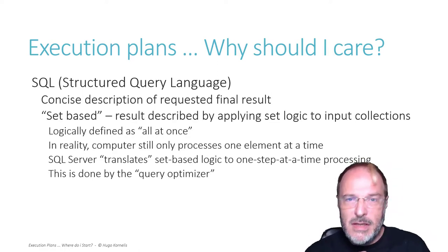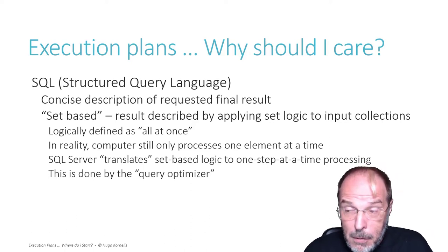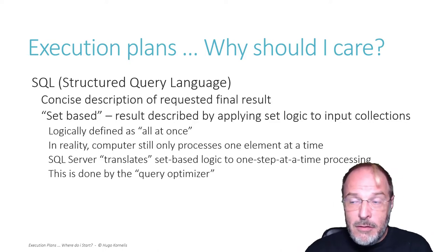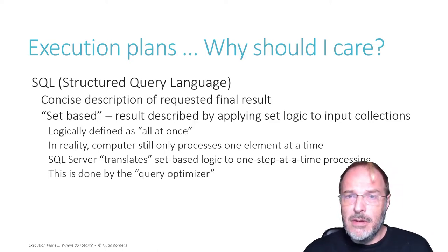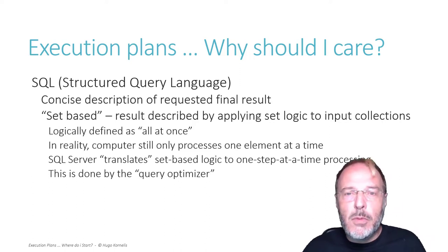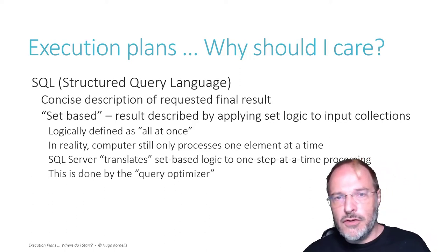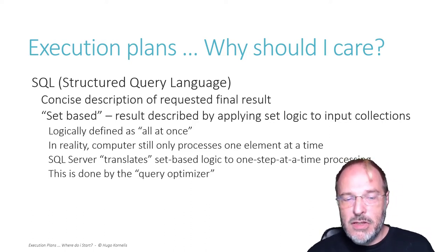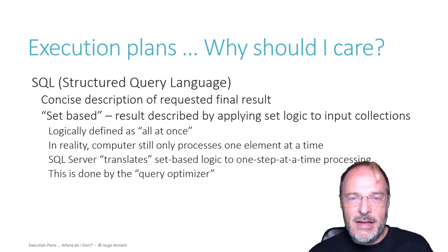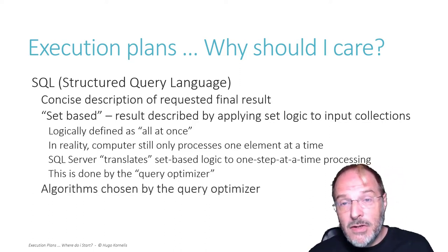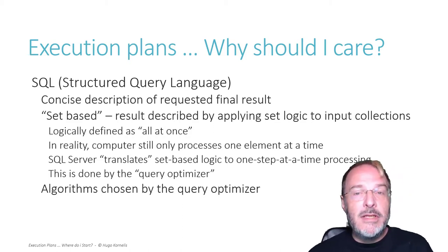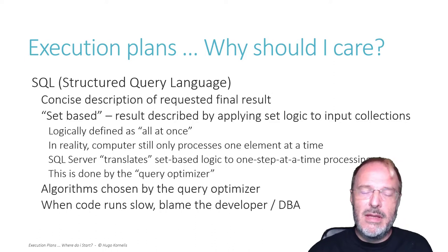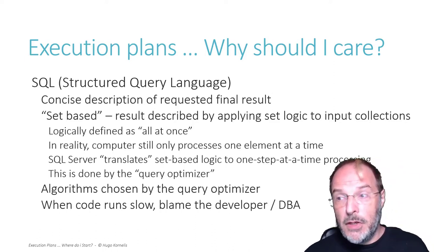We have this set-based description of what we want, but the computer still runs on hardware that per CPU can do only one instruction at a time. So there has to be a translation somewhere between this all-at-once logical description and this one-instruction-at-a-time CPU processing. The query optimizer does that. The query optimizer determines, based on the query and other information it has, how it will be executed. And that means the query optimizer gets to choose the algorithms. Which of course means that if the code runs slow, everyone will blame not the query optimizer, but the developer or the DBA - us.